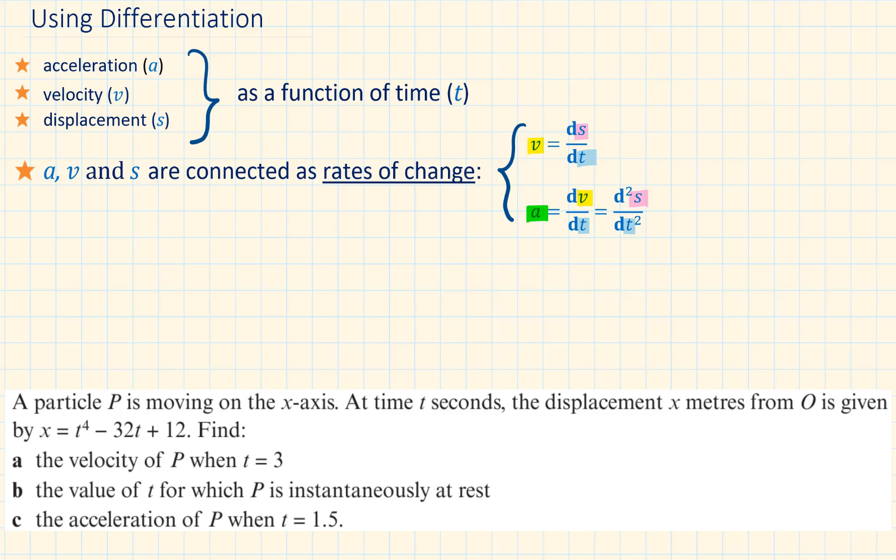An easy way to remember their connection is by comparing their units. Looking at the units of the displacement, which is meters, meters can also be rewritten as meter times second to the power of zero because anything to the power of zero is equal to one. Differentiating the unit of displacement with respect to seconds, we subtract one from the power of s. This becomes meter per second or meter times second to the power of minus one, which is the unit of velocity.